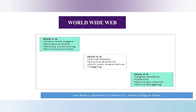Web 3.0 refers to the evolution of web utilization and interaction, which includes altering the web into a database. Its essentials include file, mobile, open ID, semantic search, and micro-blocking.